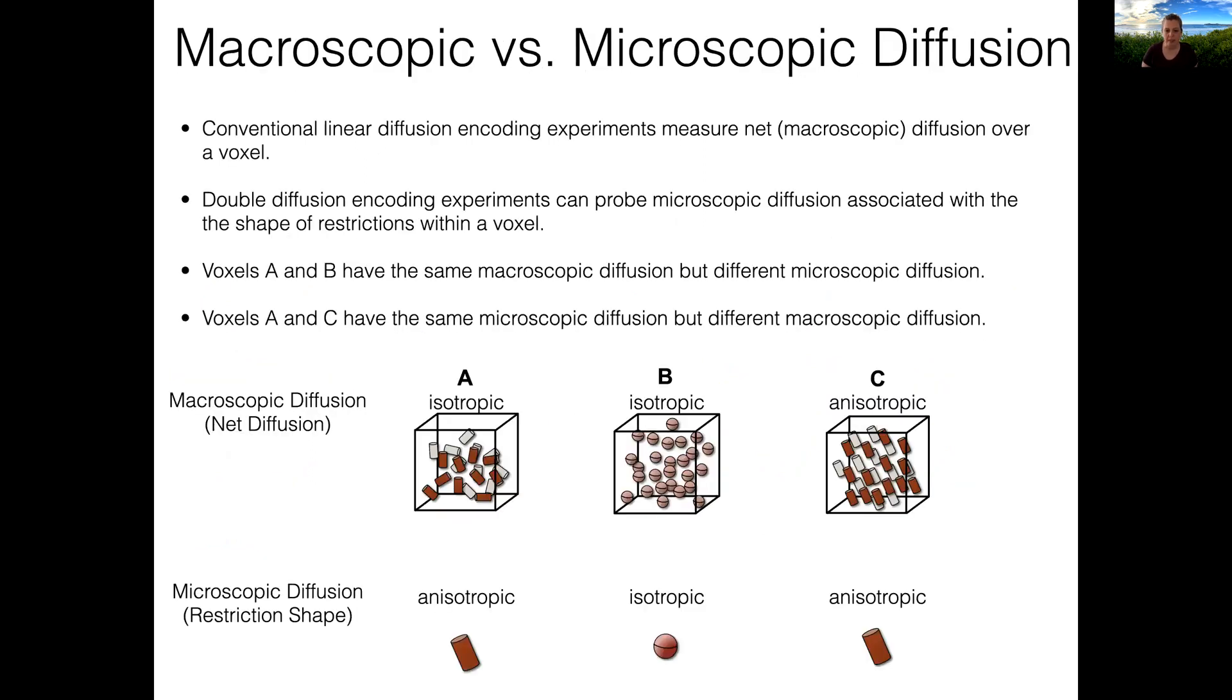This slide shows an example of the difference between the net macroscopic diffusion measured by conventional linear encoding versus the microscopic diffusion related to the restriction shape measured by multidimensional diffusion encoding. Voxels A and B have the same macroscopic diffusion, but different microscopic diffusion, while voxels A and C have the same microscopic diffusion, but different macroscopic diffusion.